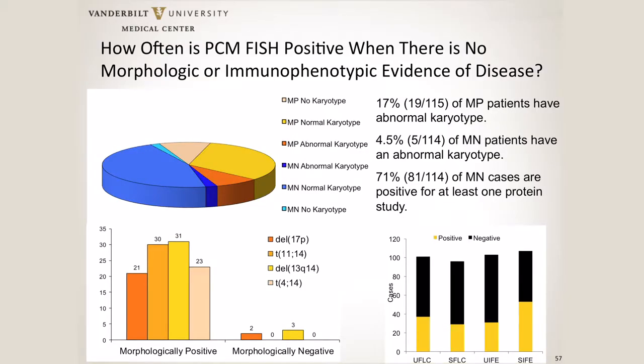We also asked how often plasma cell myeloma FISH is positive when there's no morphologic or immunophenotypic evidence of disease. Of cases that were morphologically positive for plasma cell myeloma, 17% had an abnormal FISH result — a pretty reasonable percentage. But for morphologically negative cases, less than 5% had an abnormal karyotype. By contrast, 71% of those same morphologically negative patients were positive for at least one protein study. Our clinicians were trying to use FISH as an MRD marker, and we all know it's not analytically sensitive enough for that — the protein studies are a much better measure. So we've eliminated a lot of myeloma FISH that way too.